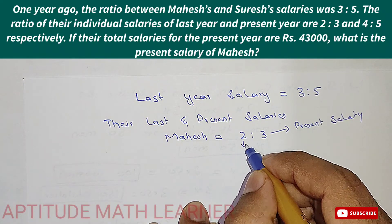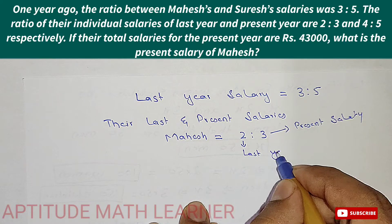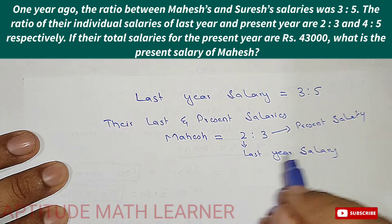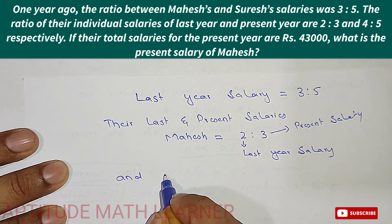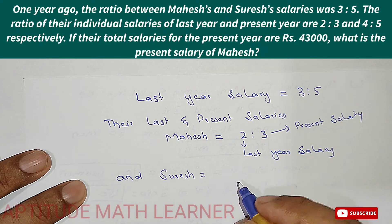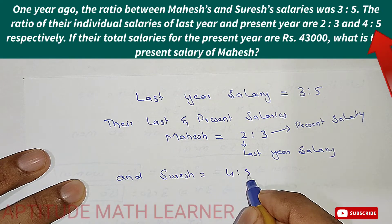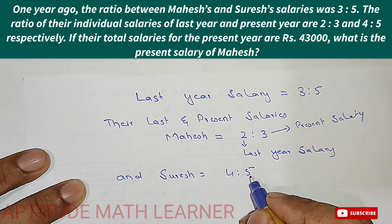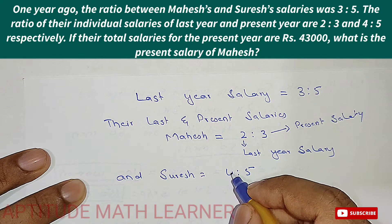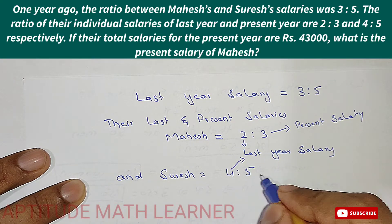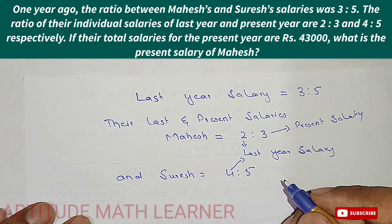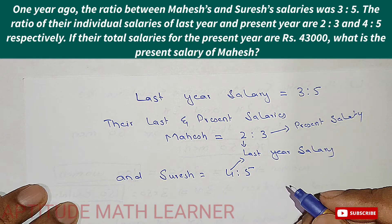This is the last year salary. For Suresh, the present and last year salary is in the ratio 4:5. This is Suresh's present salary and this is the last year salary.